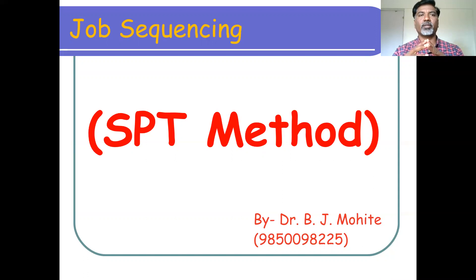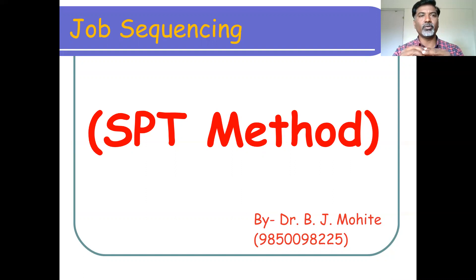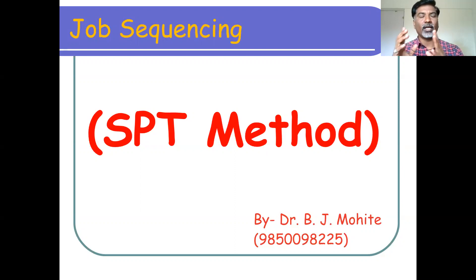Job sequencing is a very essential part for decision makers, because if you are not properly assigning the right job for the right person or the right job for the right machine, then it is not possible to use effectively the human resources as well as the machine. As a decision maker, you have to identify a proper job sequence assigned to the proper machine, so that machine utilization will be more and machine idle time will be minimum, or the job delay should be very less.